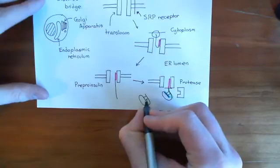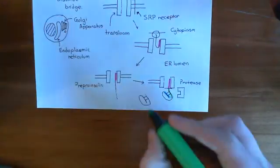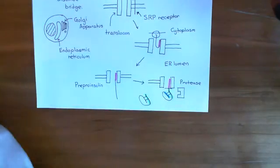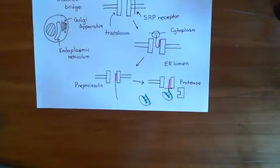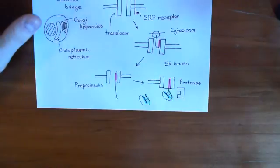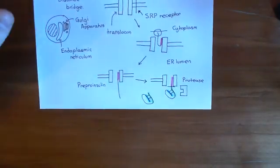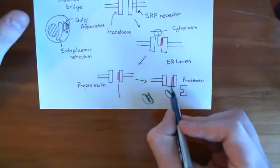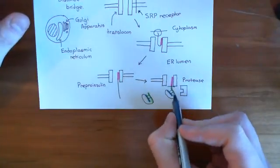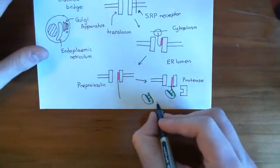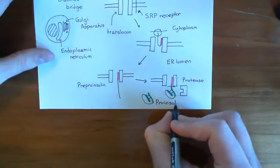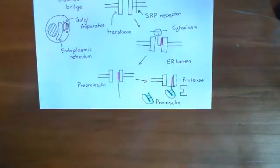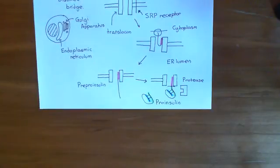This molecule is currently in the ER lumen with the B chain, the A chain, and no signal sequence anymore. So this is not pre-proinsulin anymore because we've gotten rid of the signal sequence. To be pre-proinsulin you needed the signal sequence, the B chain, the C peptide, and the A chain — the entire thing. Once we've cleaved the signal sequence off, this is what is known as pro-insulin. We're not at insulin yet — insulin will be once we've removed the C peptide, but at the moment we're at pro-insulin.